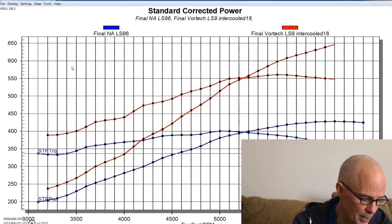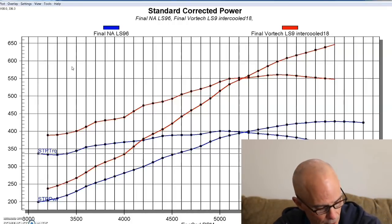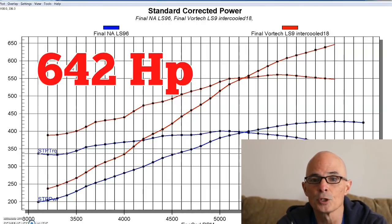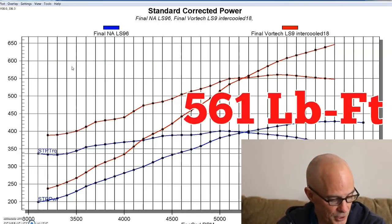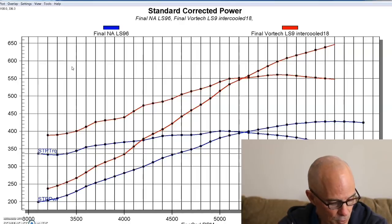So it made a peak boost of 8.2 pounds. But the power output jumped to 642 horsepower and 561 foot-pounds.